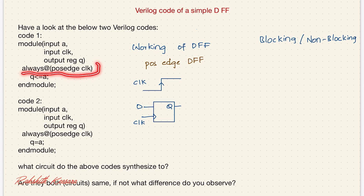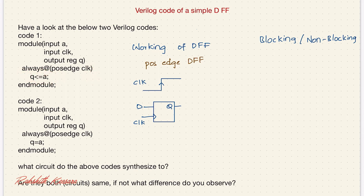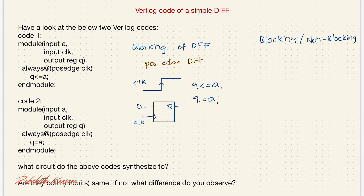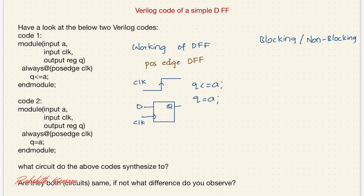Always at the positive edge of clock — whenever there is a positive clock edge, this always block will start executing. Now, what statement should you choose: is it q <= a (non-blocking) or q = a (blocking)? To understand that, let's see the difference between blocking and non-blocking. Let us say we have two statements.